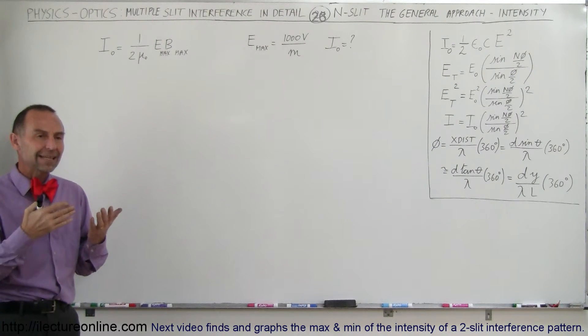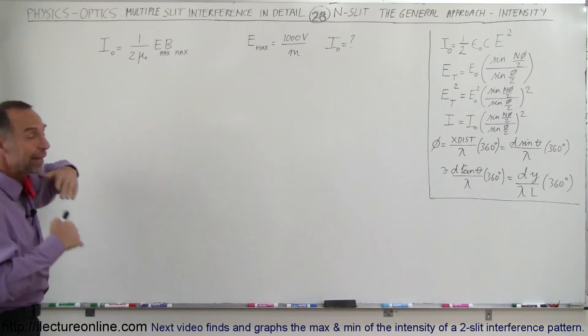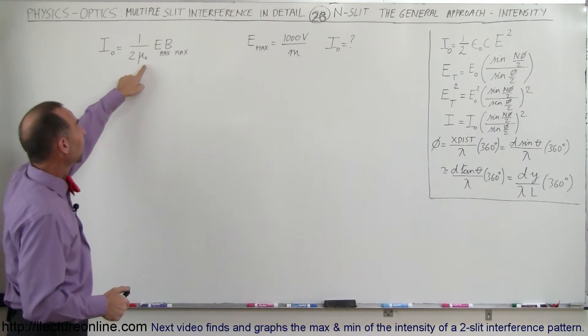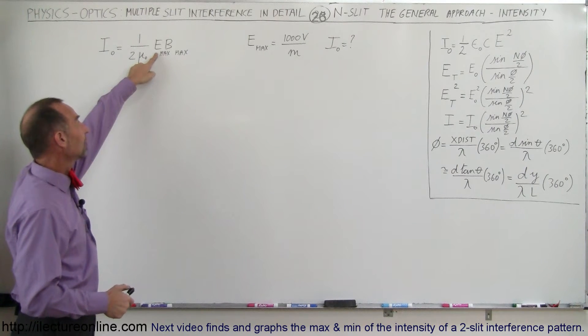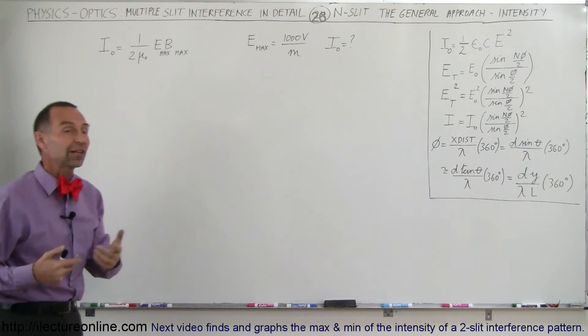But what is the intensity equal to? Well, here we have intensity of the radiation entering the slit is equal to 1 over 2 times mu sub nought times the electric field oscillations, the maximum oscillation strength plus the magnetic field oscillation strength.